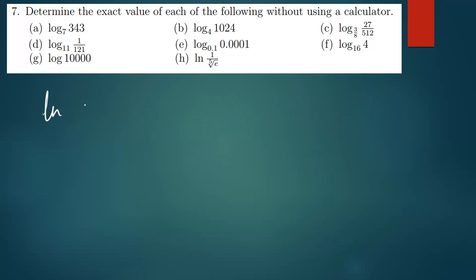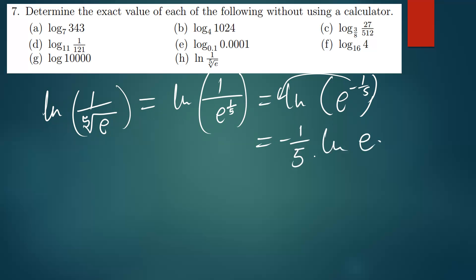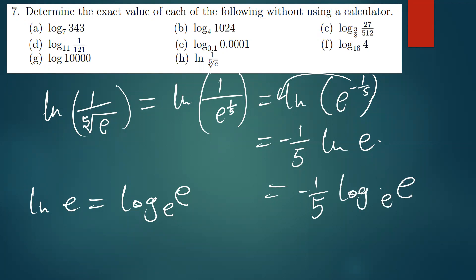The last one is ln of 1 over the fifth root of e. This can be written as ln of 1 over e to the power 1/5, which equals ln of e to the power −1/5. The −1/5 drops down: (−1/5)·ln(e). Since ln(e) = log(e) base e = 1, the answer is −1/5.